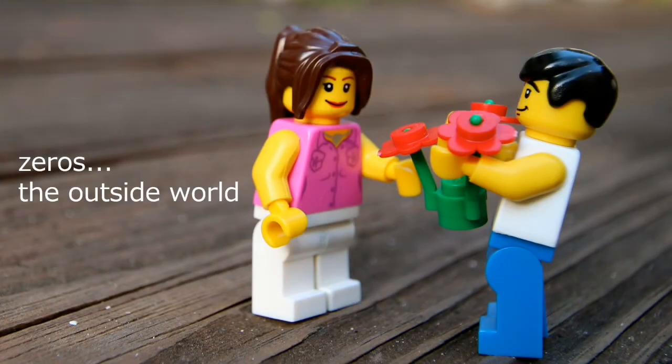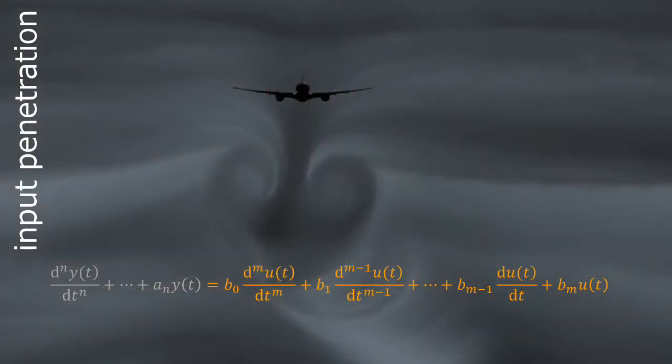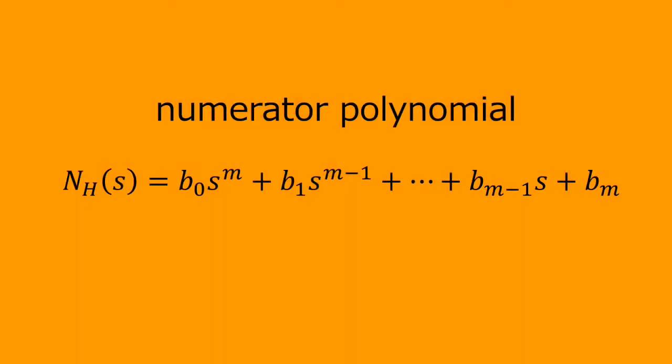On the other side, we have the zeros that describe how the system is affected by the external excitation, the outside world. Thus, the coefficients b0 to bm, associated with the input at the differential equation, define how the input penetrates the system. And these are the coefficients of the numerator polynomial of the transfer function that provides the zeros.